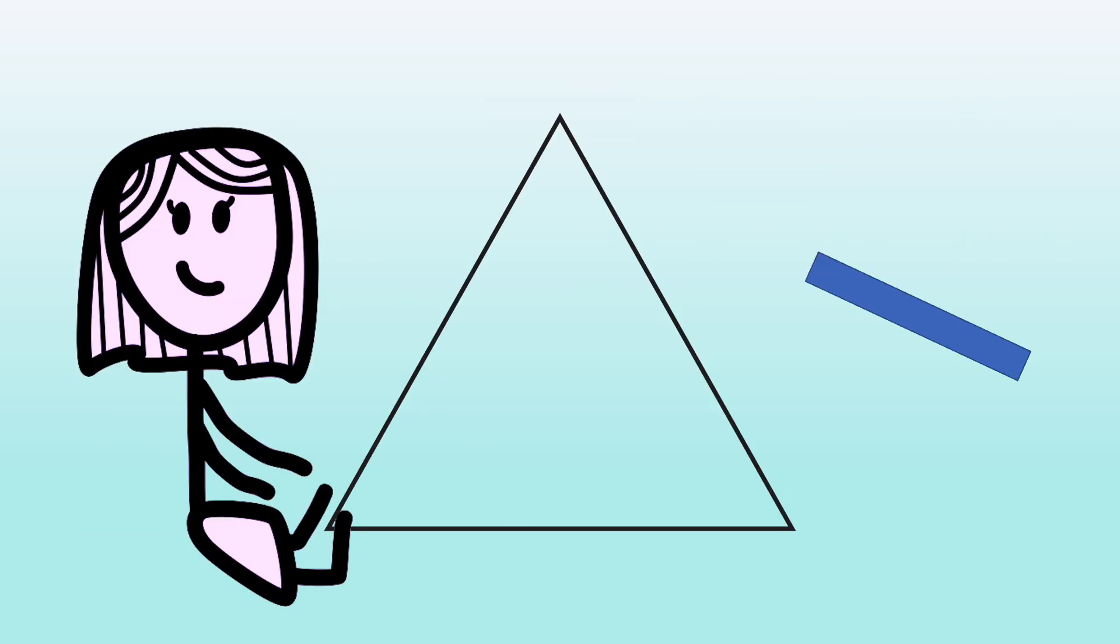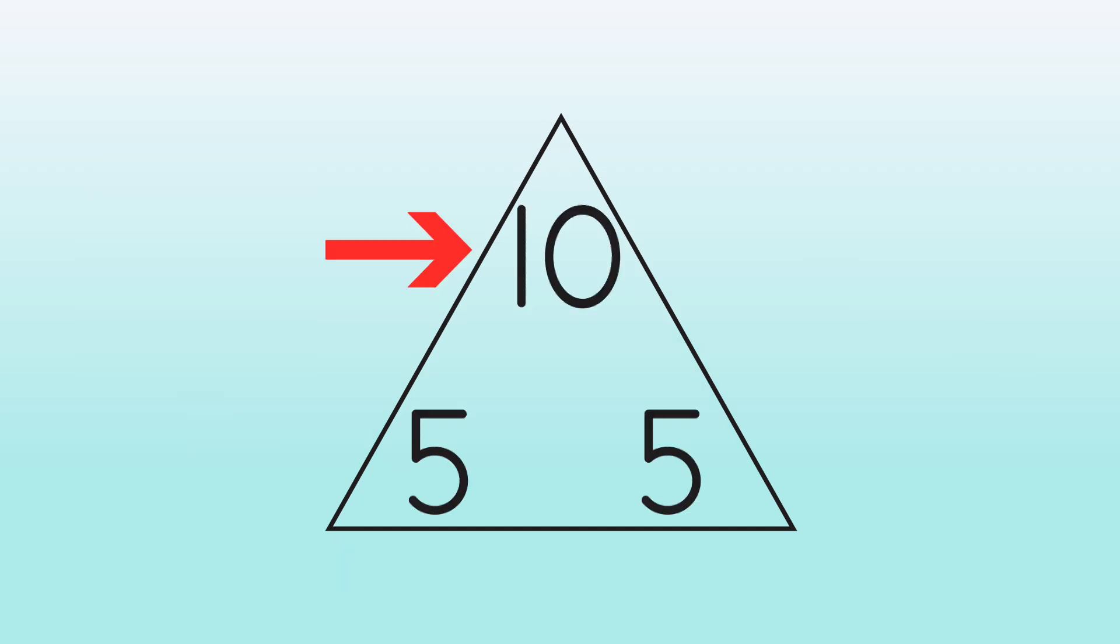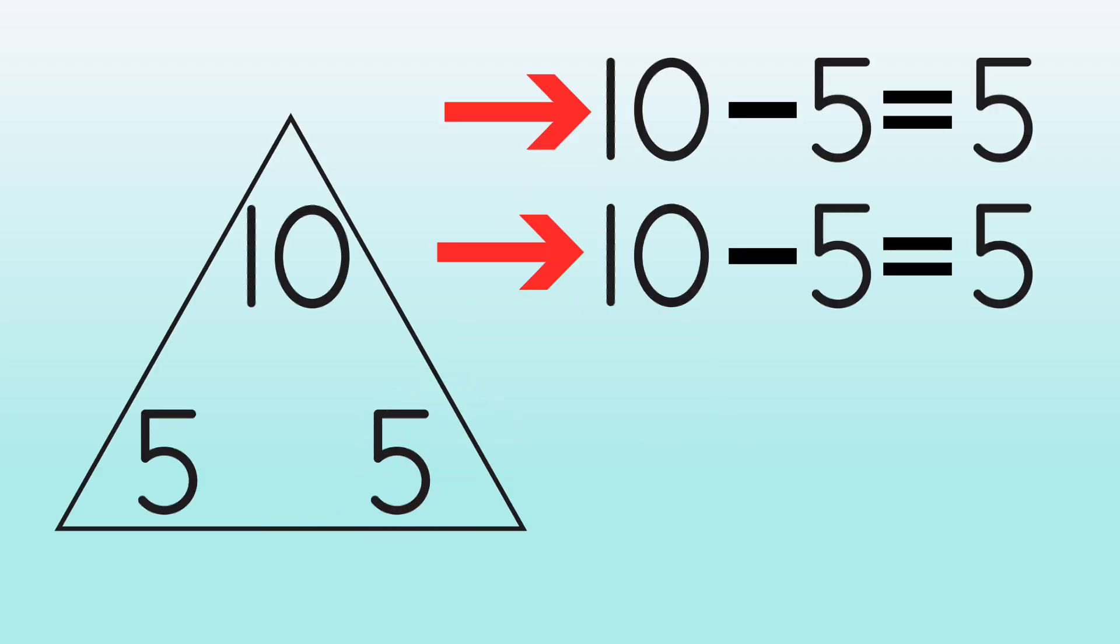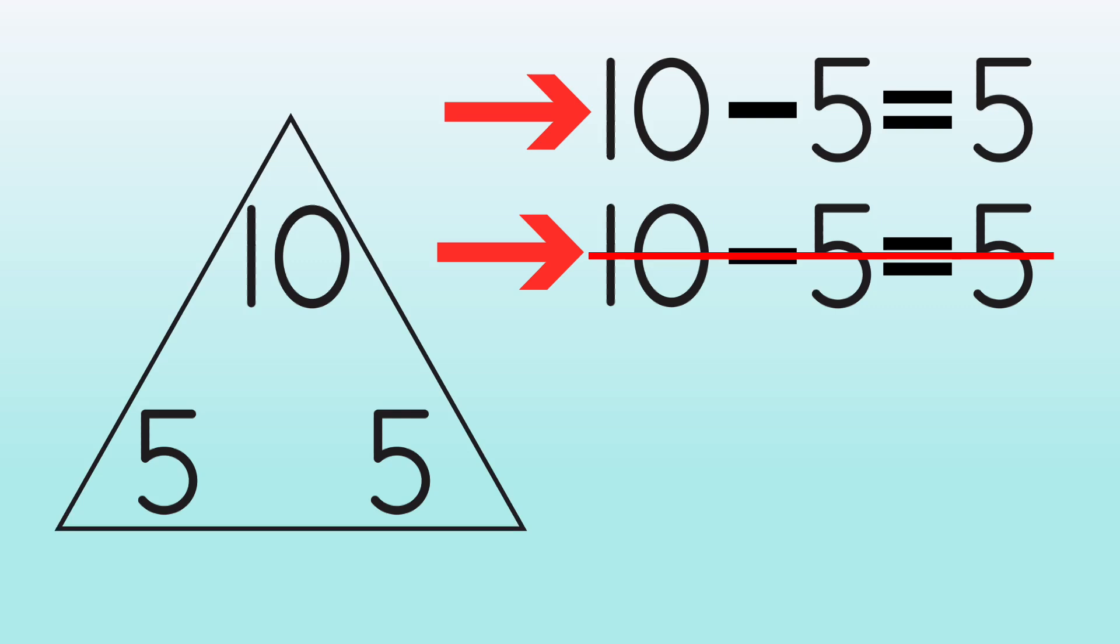Next, she tries subtraction. Start at the top, go down and over. 10 minus 5 equals 5. And go down the other way. 10 minus 5 equals 5. Again, both are the same, so we only list one.